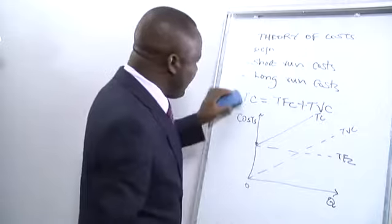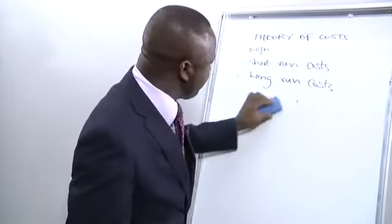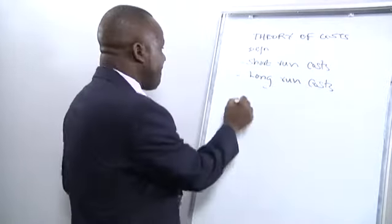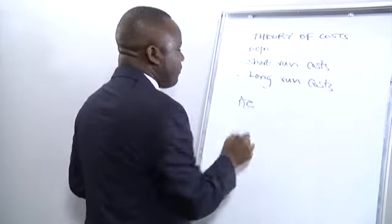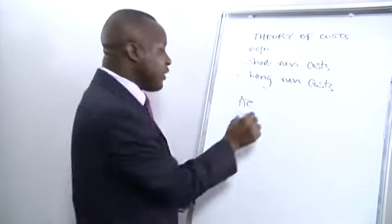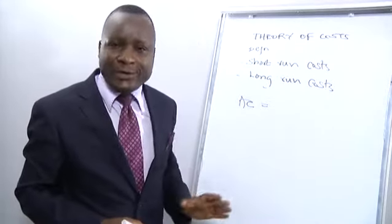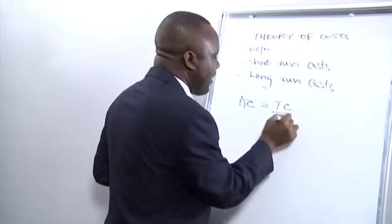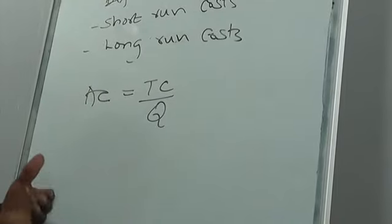So, in still continuing to analyze our short-run costs, we also have average costs of production. Average costs basically represent the total cost of production per unit. The total cost of production per unit.